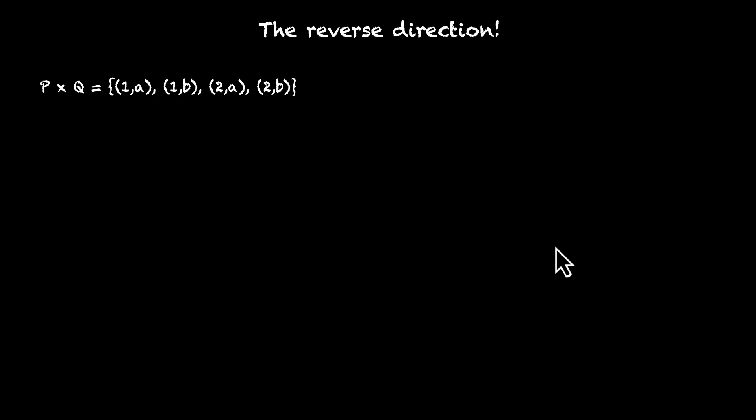If we know a Cartesian product, let's say we are given this Cartesian product P times Q, can we figure out what P and Q are? Can we find the sets P and Q? Pause the video, think about it.